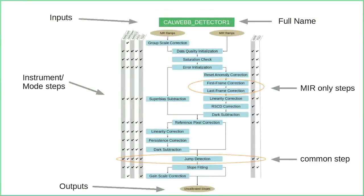Here's what detector one looks like in detail. The inputs are the near-infrared and mid-infrared ramps — those are the two different kinds of detectors on JWST. They have different instrumental artifacts, so there are steps in common shown in blue in the middle, and steps that are separate and different for each detector type. Some mid-infrared-only steps include first frame and last frame correction. There's also a jump detection step run on all data. The columns on either side show which steps are run for a particular instrument or mode, such as TSO — time series observation.